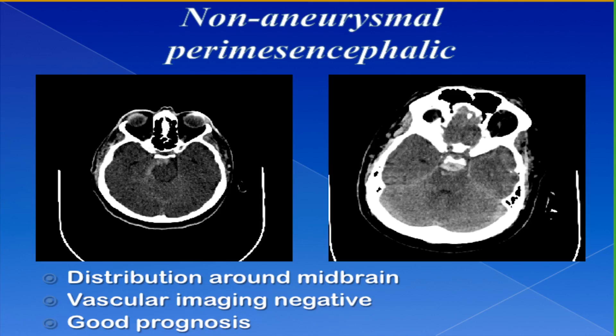These are examples of perimeseencephalic subarachnoid hemorrhages. The blood is much more localized right around the midbrain, typically not associated with an aneurysm. There's some controversy about the extent to which you should look for an aneurysm — some authorities recommend you may not even need a catheter angiogram, and could get away with a CT angiogram or MRA. Our practice is typically to perform a catheter angiogram in these cases, with a follow-up non-invasive vascular image down the road.